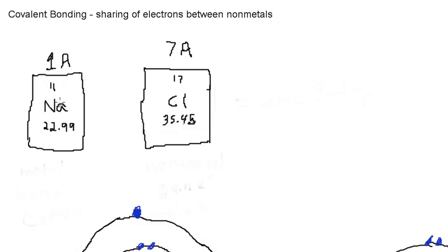Sodium is an atom that's located on the left-hand side of the periodic table on group 1. Sodium has 11 protons — this is the atomic number. It has an atomic mass of 22.99. And if you look at the top of the periodic table, you're going to see that sodium falls under a group called 1A.